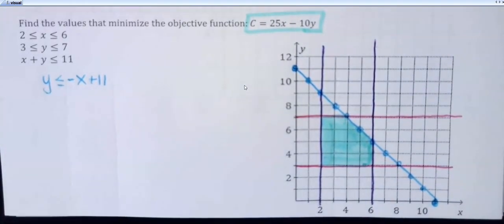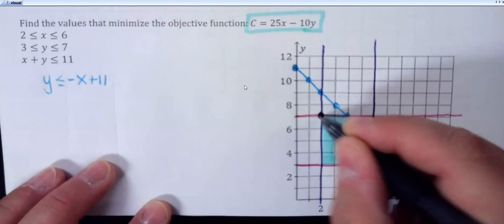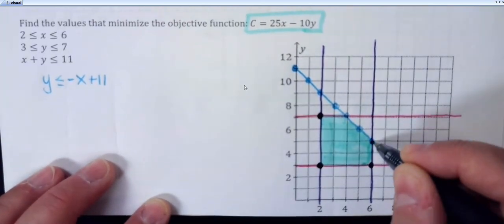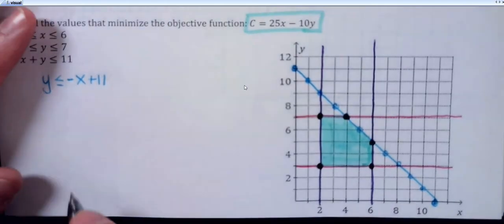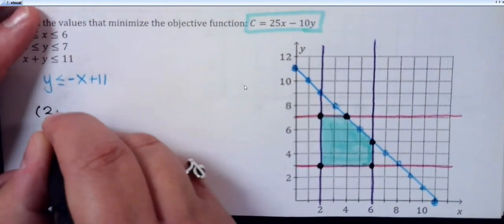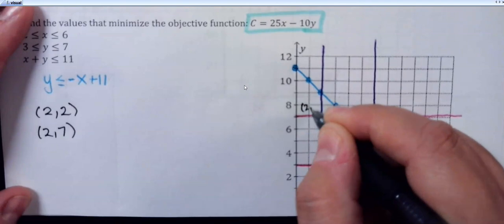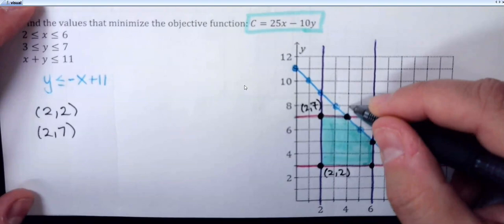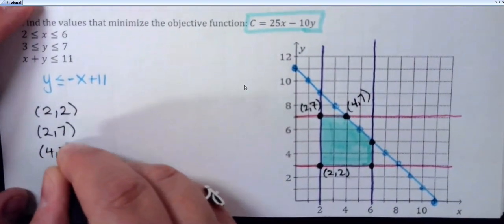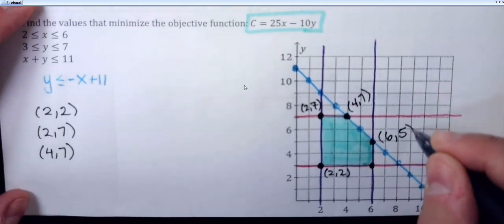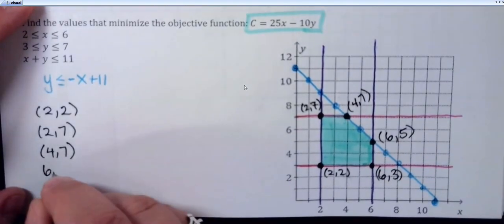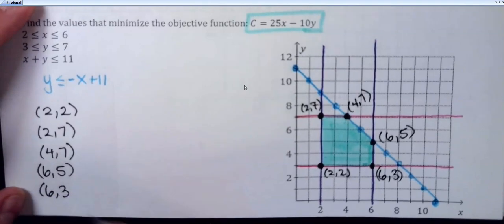We're less than that diagonal line, so my feasible region is going to be in here. I need the vertices of this feasible region — those are the only possible points that can maximize or minimize your objective function. How many vertices do you see there? There are five. It depends on the question — you might have more than four; a lot of them have four but it can have more. So just the corners of the shaded region: I have the points (2, 3), (2, 7), (4, 7), (6, 5), and (6, 3).